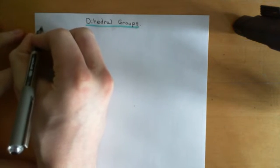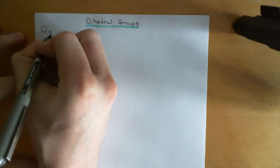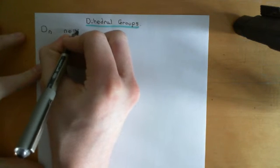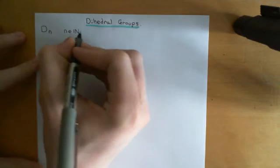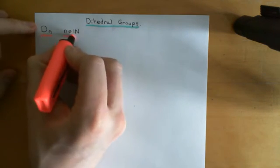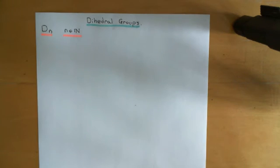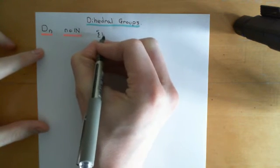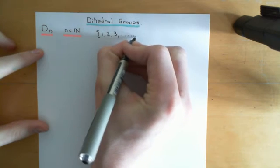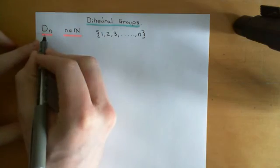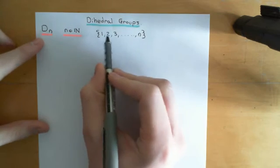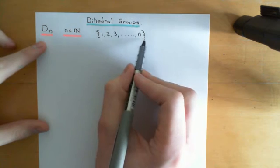So the names of the dihedral groups are going to be D little n, where little n can be any natural number — it can be 1, 2, 3, any of those counting numbers. The dihedral groups, like the S_n and C_n groups — the symmetric and cyclic groups on n elements — are going to be groups of symbols representing set permutations of the set {1, 2, 3, ..., n}.